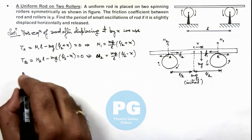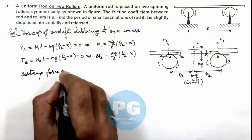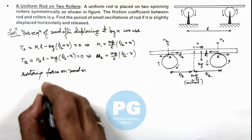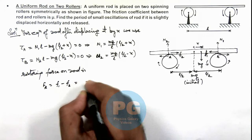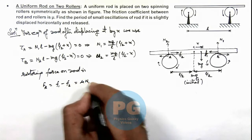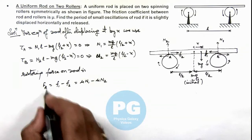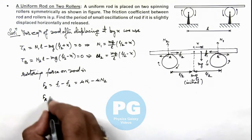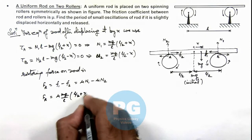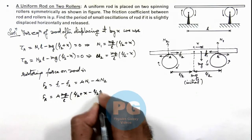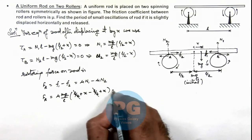So we can write the restoring force on rod is F₁ - F₂, which is μ times N₁ minus μ times N₂. If we substitute the values of N₁ and N₂ over here, this restoring force becomes μ times (mg/L) multiplied by (L/2 + x) minus (L/2 - x). This L/2 gets cancelled out and this will result as ma.